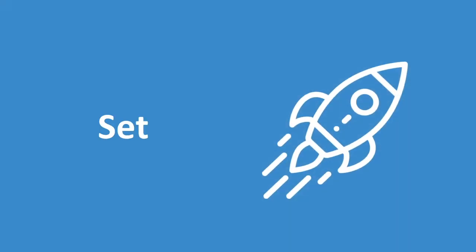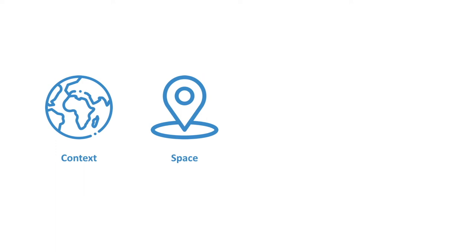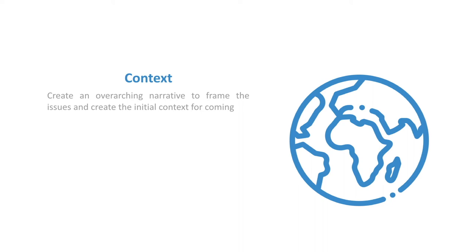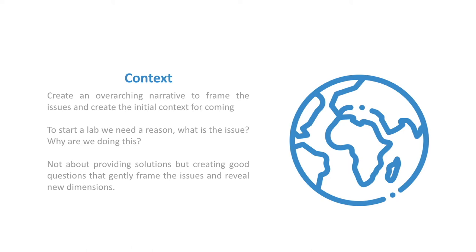Now we'll dig into how to set up a lab. We're going to need to create some context around why we're doing this — what is the purpose of the lab — as well as structures for collaboration and methods for experimentation. We need to create an overarching narrative to frame the issue and create the initial context for coming together. This is not about providing solutions or predefined answers, but opening questions to frame the issue in new ways and attract members in to form part of this process of figuring out solutions.